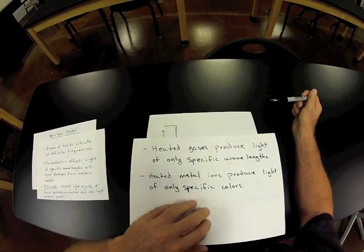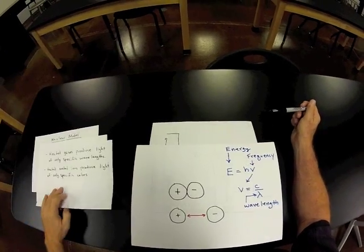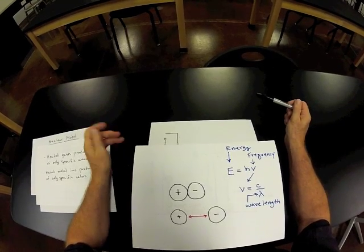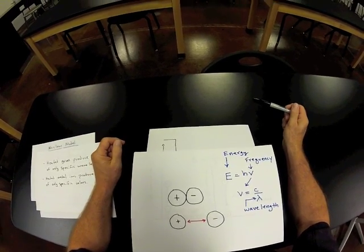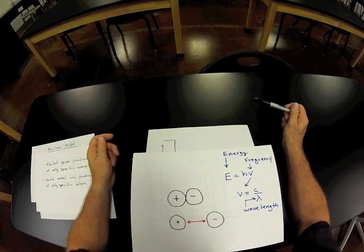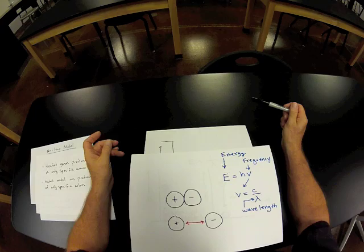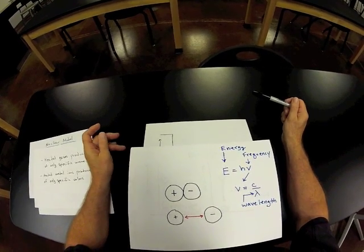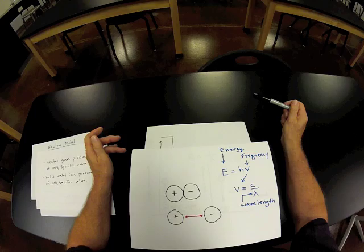So the take-home message here is that different elements respond to light in different ways. When they're heated or when an electrical current is run through them, they can be made to produce light. And when they do, the light that a particular element produces is unique to that material.